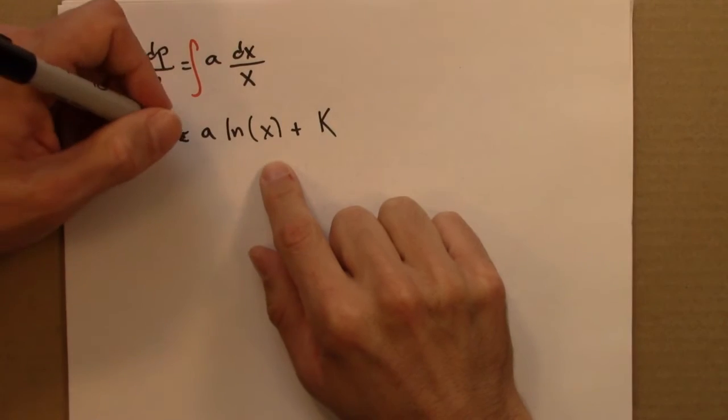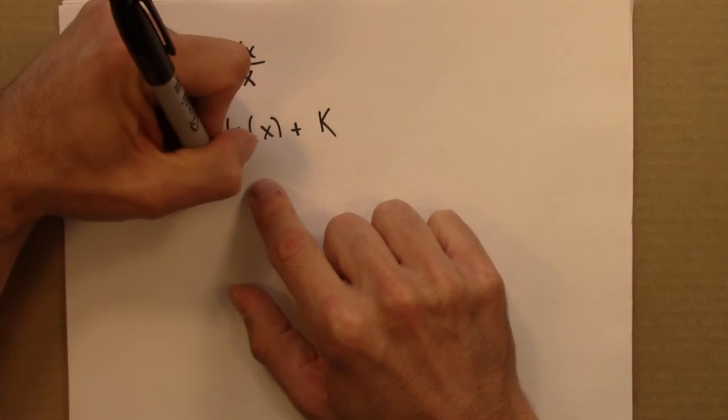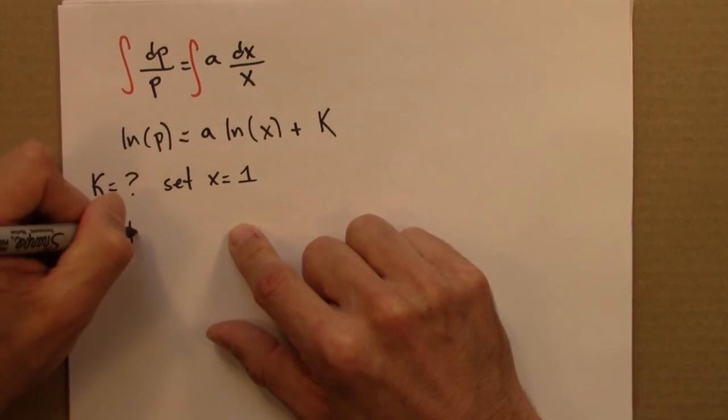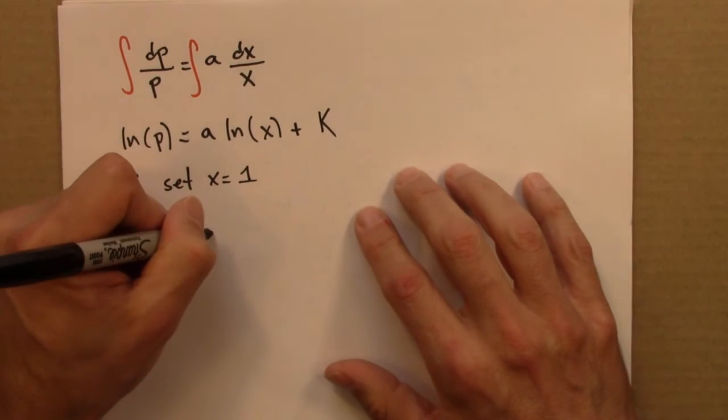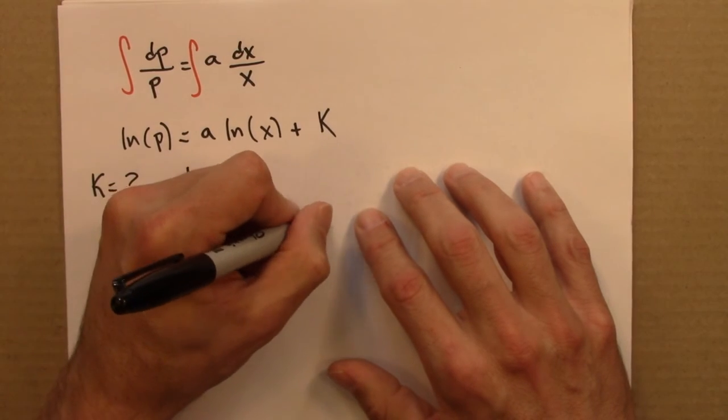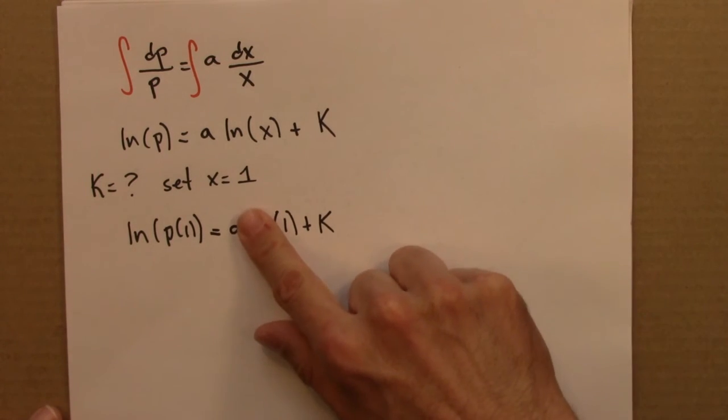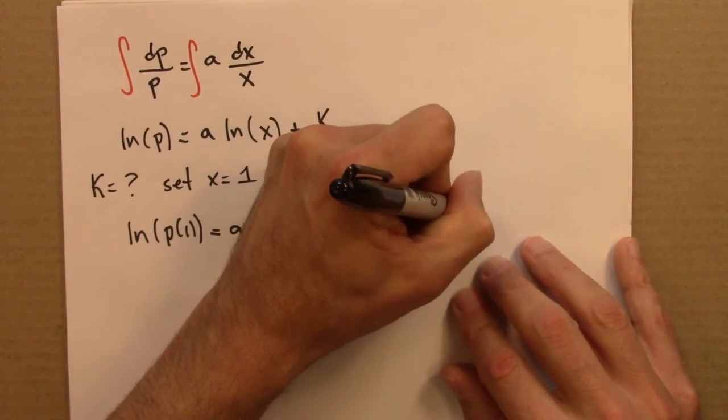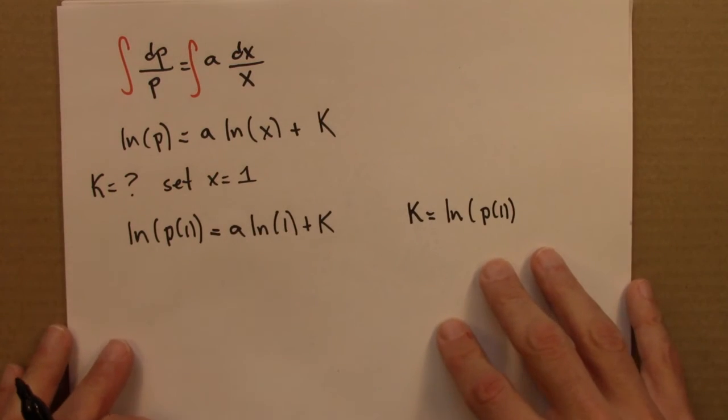So next we'll need to think about the value of this constant. So to evaluate the constant, I'm going to set x equal to 1. So then I've got log of P of 1, and that's going to equal a times the log of 1 plus k. But the log of 1 happily is 0. So this tells me that k is just the natural log of P of 1.